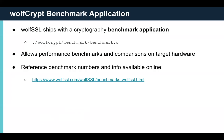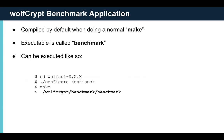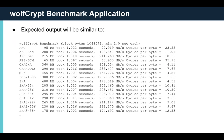We also ship a WolfCrypt benchmark application at wolfcrypt/benchmark/benchmark.c. This lets you benchmark WolfCrypt's crypto algorithms on your own hardware, which is helpful for performance comparisons and for comparing software versus hardware crypto. We post reference numbers on the webpage for several platforms. This is also compiled by default when running make; the executable is called benchmark and can be run as wolfcrypt/benchmark/benchmark from the root directory. Output shows each algorithm benchmarked for at least one second, with megabytes per second throughput and cycles per byte.